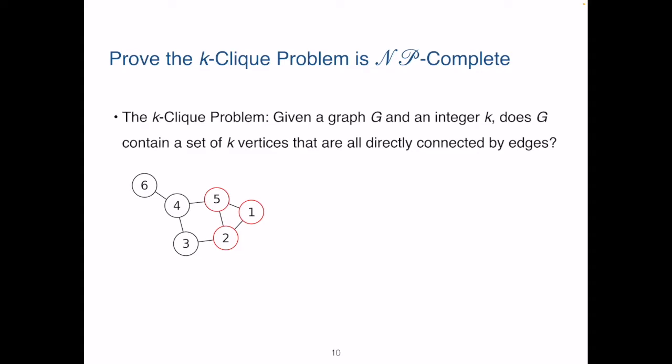This is the k-Clique problem. Given the graph G and the integer k, does G contain a set of k vertices that are all directly connected by edges? Or we say, are these k vertices form a complete subgraph? For instance here,